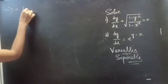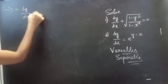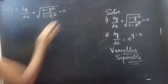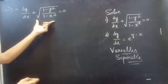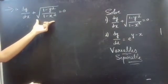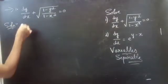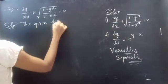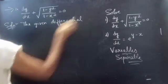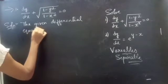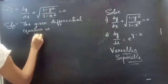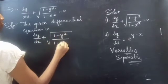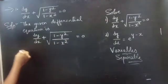First problem: we have to solve the given differential equation dy/dx plus square root of (1 minus y squared) over (1 minus x squared) equals to 0. The given differential equation is dy/dx plus square root of (1 minus y squared) over (1 minus x squared) equals to 0.